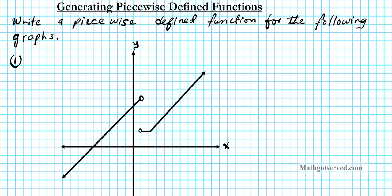This is graph number one. To generate a piecewise defined function we need to take a look at this graph and determine where the splits are happening or where the different distinct functions are. You'll notice that there's a line here, there's a jump discontinuity and another line here, and then there's a shift or a corner and then there's another line here. That easily tells us that there are going to be three functions to define this graph.